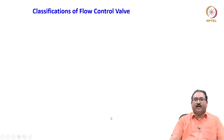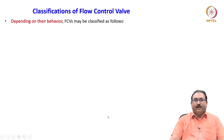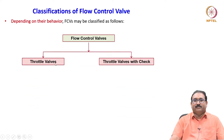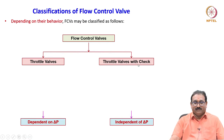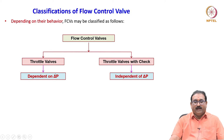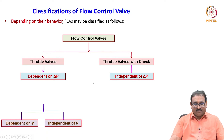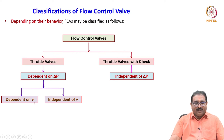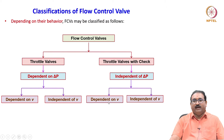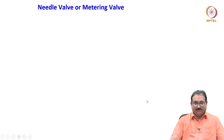After this brief introduction, we will move on to the classifications of flow control valves. Depending on their behavior, FCVs can be classified as throttle valves, and throttle valves with check. Within throttle valves, there are types dependent on differential pressure and types independent of delta P. Similarly, there are types dependent on kinematic viscosity V and types independent of V. The same classification applies to throttle valves with check.